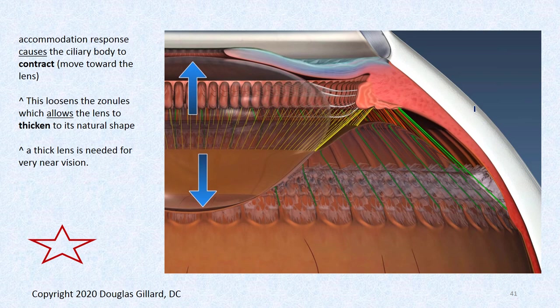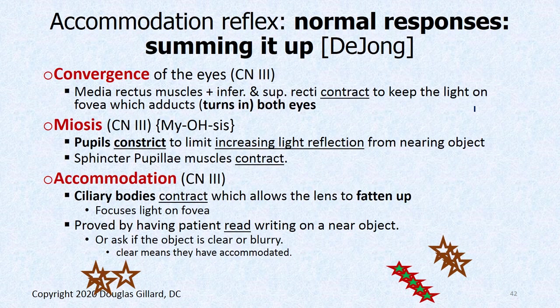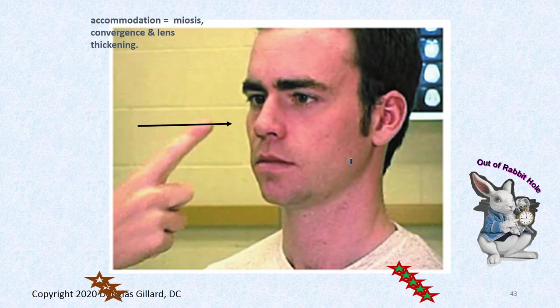Summing up the accommodation reflex: convergence should be normal — both eyes turn in if cranial nerve 3 muscles are working. Miosis should be normal — both pupils constrict due to extra light. Accommodation should be normal — you send a signal through cranial nerve 3 to contract the ciliary body, which loosens the zonulae and allows the lens to snap to full thickness for close-up vision.